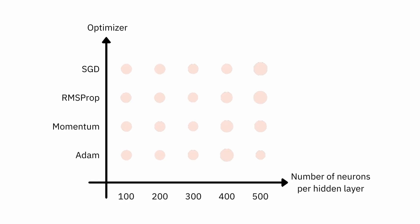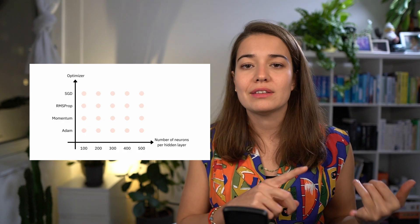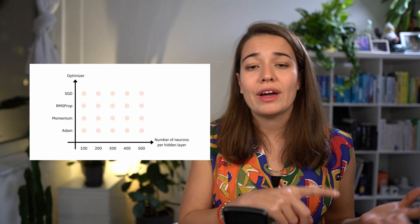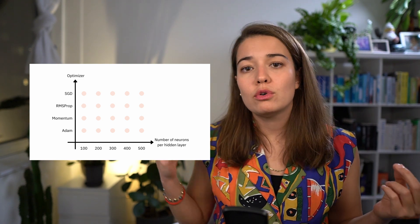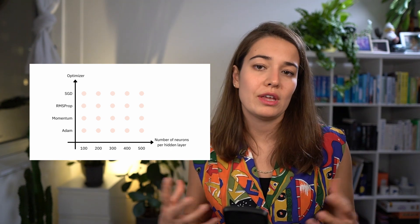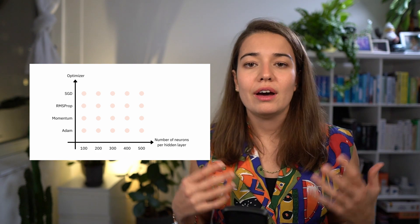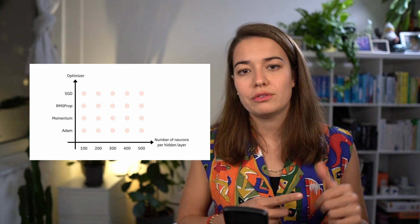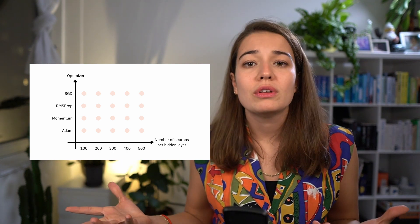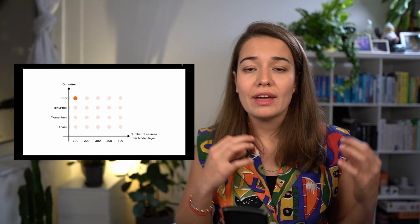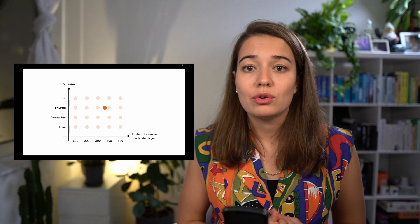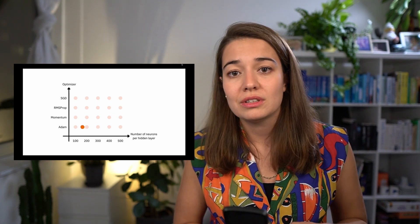Let's say we are trying to optimize the number of neurons in our hidden layer and also choose an optimization algorithm. We have four options for the algorithm: gradient descent, RMSProp, gradient descent with momentum, and Adam. For number of neurons, we're trying increments of 100 — so 100, 200, 300, 400, and 500. That gives us 20 combinations. You could try all of them — that's grid search — using cross-validation or a validation dataset to select the best one.